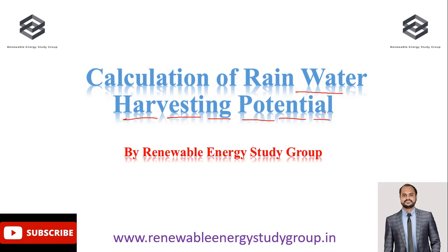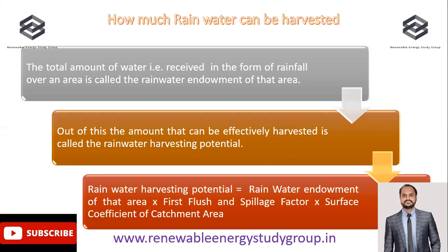Here we will be focused on an important fundamental concept in the calculation of rainwater harvesting potential. We can calculate it in cubic meters or in liters. The total amount of water received in the form of rainfall over an area is called the rainwater endowment of that particular area.